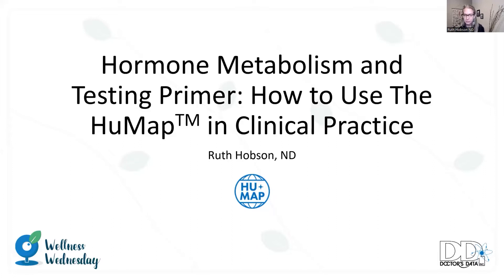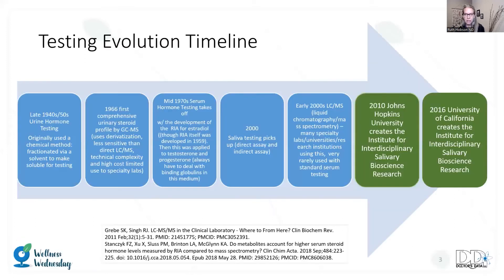I wanted to start with a timeline of hormone testing evolution. I was surprised to learn that urinary testing was actually kind of the first on the block. We see urinary hormones in the 40s and 50s, and technology changed a little in the 60s with more specific methods. Gas chromatography came on — it was really complex, took a lot for technicians to run, and the cost limited it to specialty labs and larger institutions.